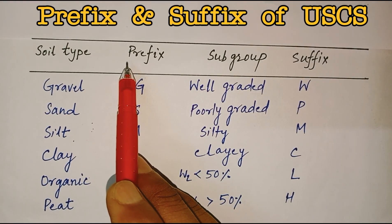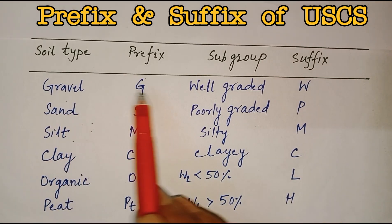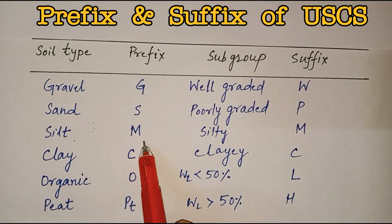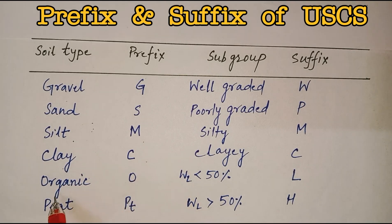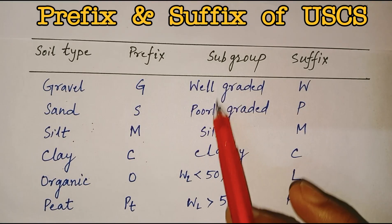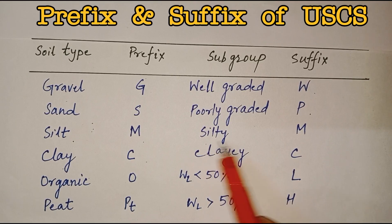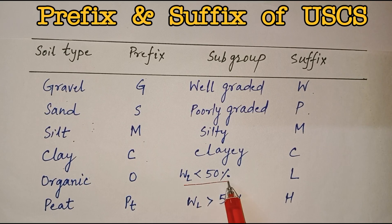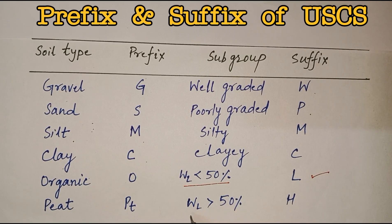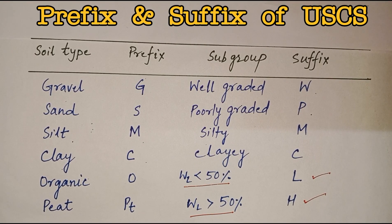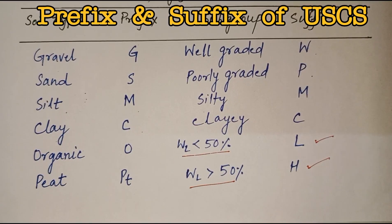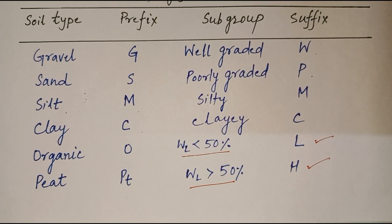Here we can see the prefix and suffix symbols used in the Unified Soil Classification System. For gravel the symbol is G, sand is S, silt is M, clay is C, organic soil is O, and peat is PT. The subgroup suffixes are: well graded (W), poorly graded (P), silty (M), and clayey (C). If the liquid limit is less than 50% the suffix is L, and if the liquid limit is more than 50% the suffix is H.